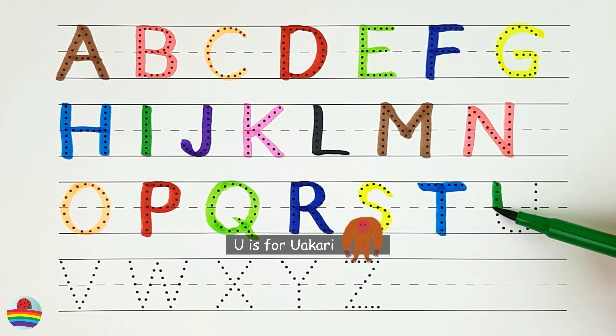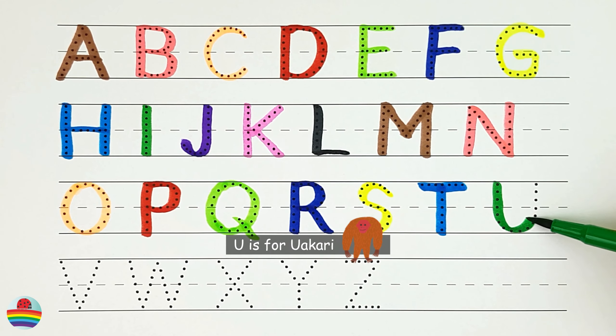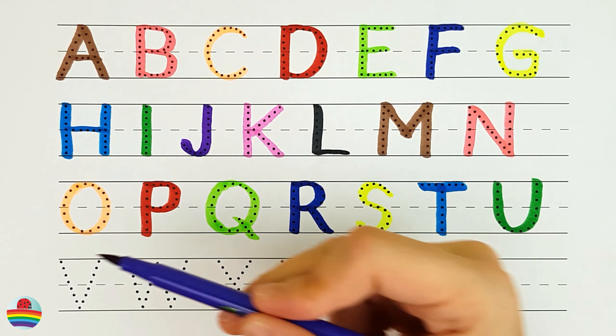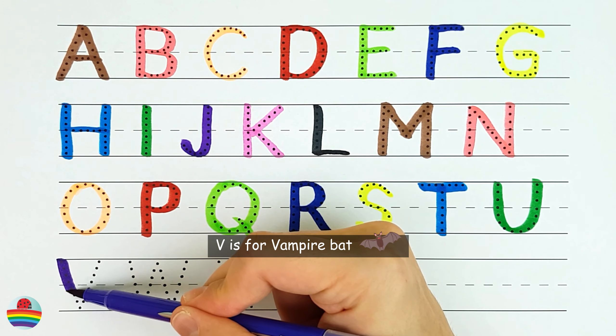U. U is for uakari. V. V is for vampire bat.